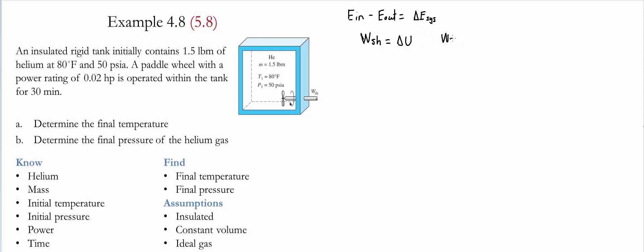The work provided by the shaft is simply calculated by taking the power of the shaft times the time that it runs for. This is equal to 0.02 horsepower. And the time that it runs is equal to 30 minutes, which is equal to half an hour. And then using the conversion, 2545 BTU per hour equals 1 horsepower. Notice horsepower and horsepower cancels, hour and hour cancels, and the unit left with is BTU. So the work done by the shaft equals 25.45 BTU.